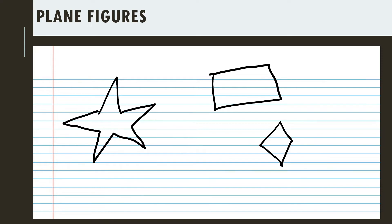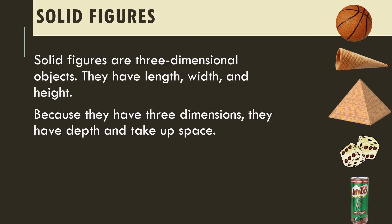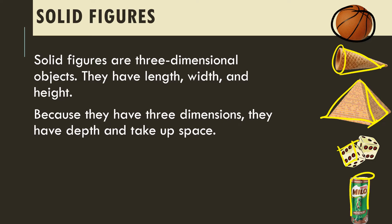Any shape that we can draw — like a star, rectangle, or diamond — is still 2D, two-dimensional, with no thickness. Therefore, it's a plane figure. Solid figures, on the other hand, are three-dimensional objects. They have length, width, and height. Because they have three dimensions, they have depth and take up space. Examples include the sphere (ball), cone, pyramid, dice (cube), and cylinder.